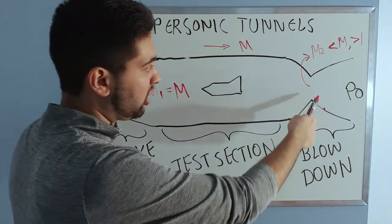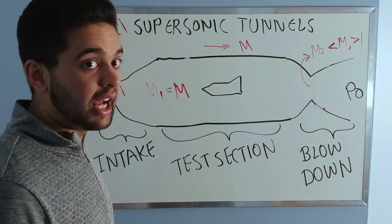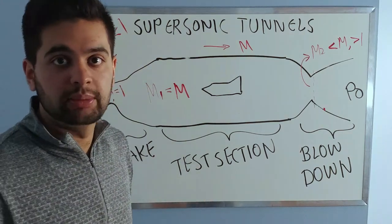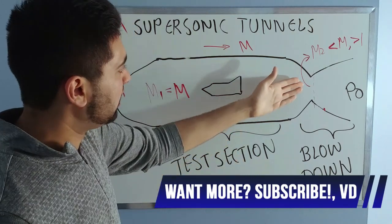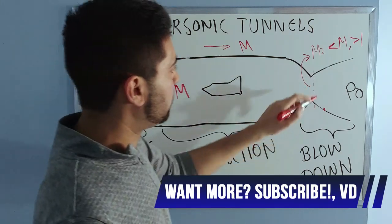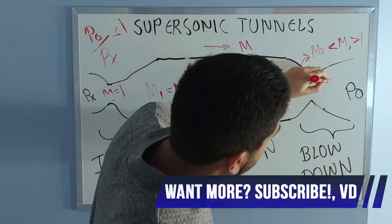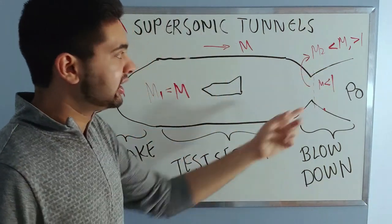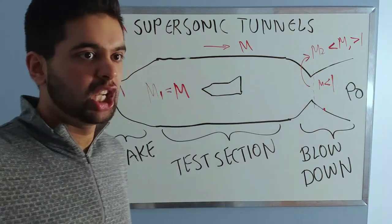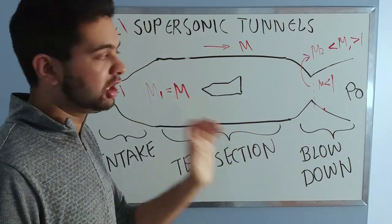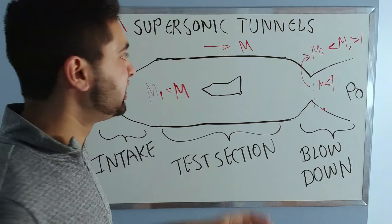What's very interesting is that this blowdown phenomenon is caused by this normal shock. I said before that when you have a normal shock, the Mach number downstream is always subsonic, which is why you will have this Mach number supersonic, and then this Mach number here will be less than one. This is something which we need.